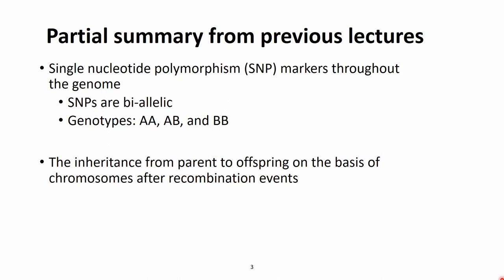We continue to speak about single nucleotide polymorphisms, or SNP markers, which are distributed fairly evenly throughout the genome. These SNPs are biallelic, meaning there are two alleles at each locus, and these alleles can come together in about three forms: the homozygous AA, the other homozygous BB, and heterozygous genotypes.